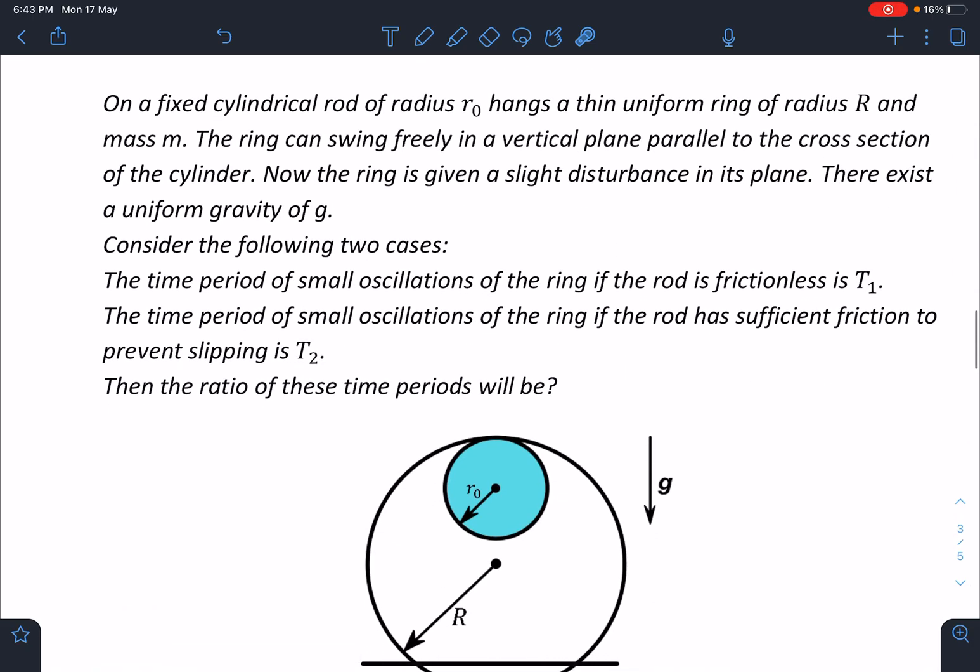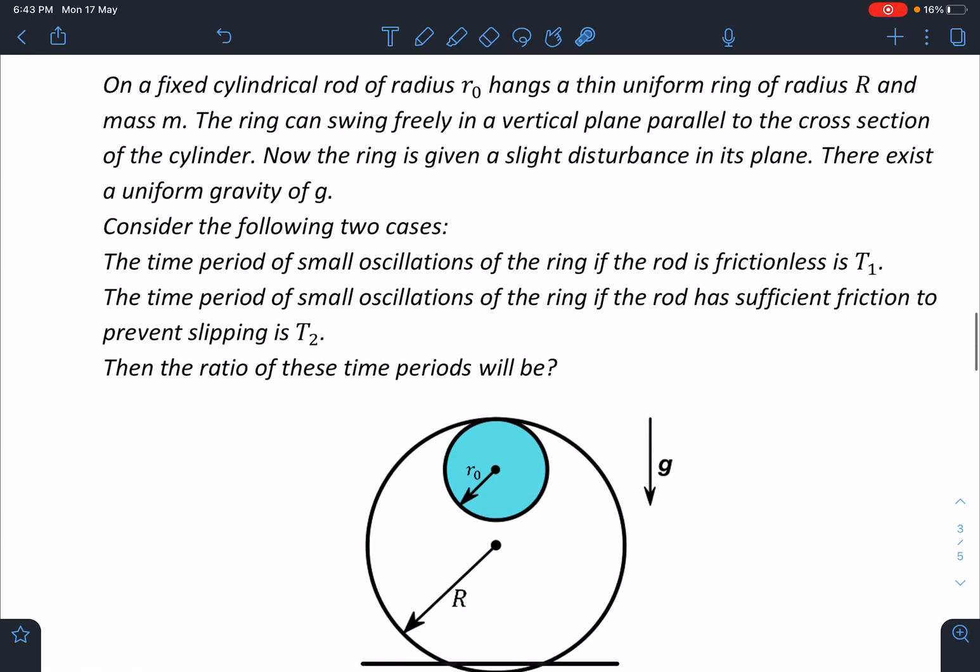So here is the statement of this problem. It is an original problem. On a fixed cylindrical rod of radius R0, there hangs a thin uniform ring of radius R and mass M. The ring can swing freely in vertical plane parallel to the cross section of the cylinder. Now the ring is given a slight disturbance in its plane. There exists a uniform gravity of g.